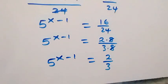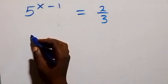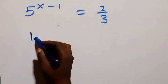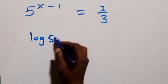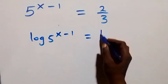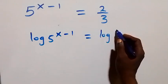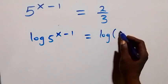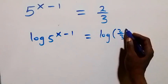From here, we take the log on both sides. We have log of 5 raised to power x minus 1 equals log of 2 over 3.